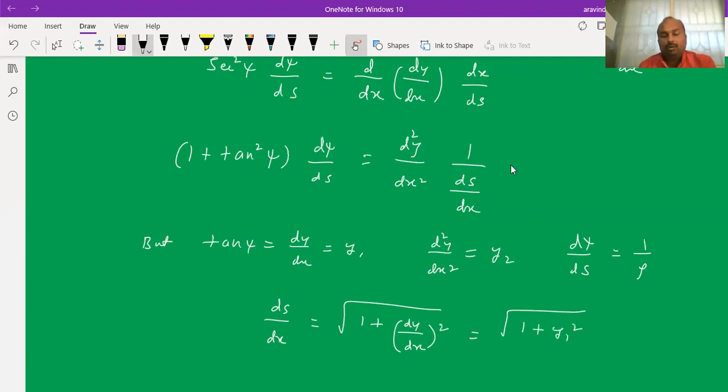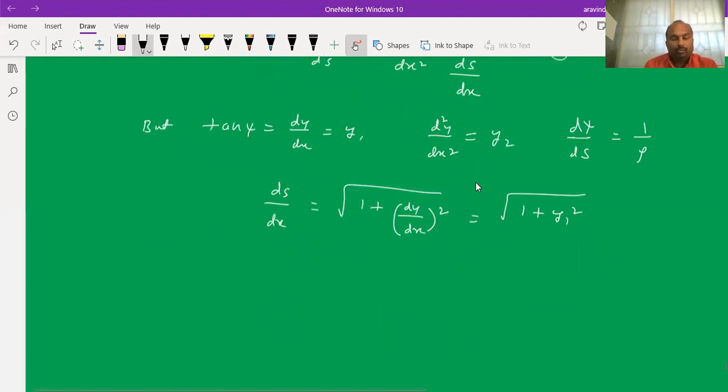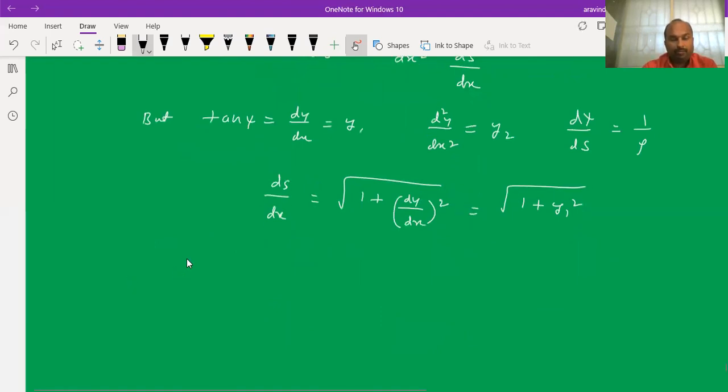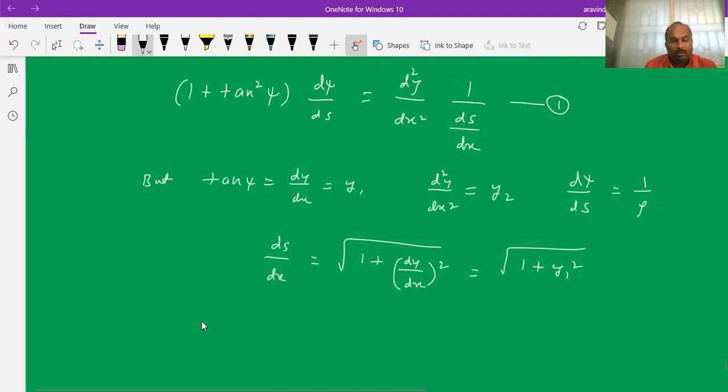Now let us substitute all these things in the above equation. Let us replace tan psi, d psi by ds, and the second order derivative. Therefore 1 plus tan square psi becomes 1 plus y1 square. This d psi by ds is 1 by rho and d square y by dx is y2, 1 divided by square root of 1 plus y1 square.